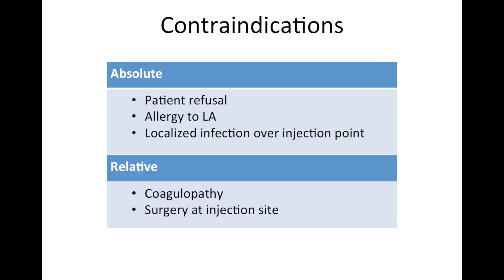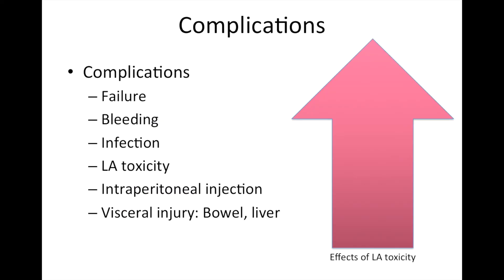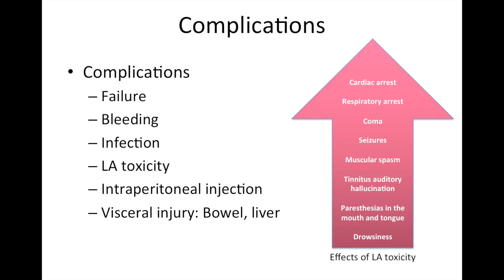The absolute contraindications of TAP block are patient refusal, allergy to local anesthetic, and localized infection over the injection point. Relative contraindications include coagulopathy and surgery performed at the site of injection. TAP block is generally safe with few complications. Possible complications include failure of the block, bleeding, infection, local anesthetic toxicity, intraperitoneal injection, and visceral injury. There have been case reports of bowel hematoma, liver laceration, and intrahepatic injection.